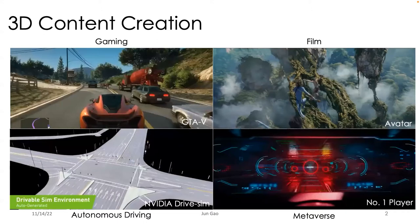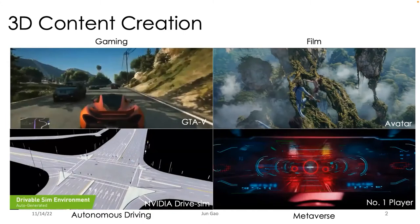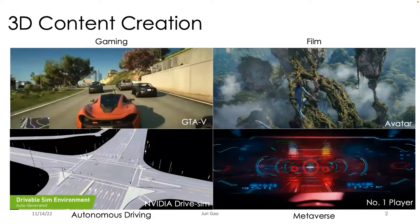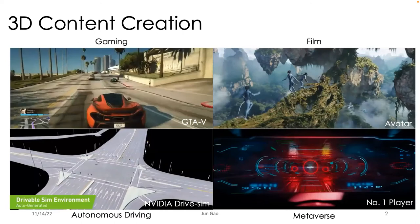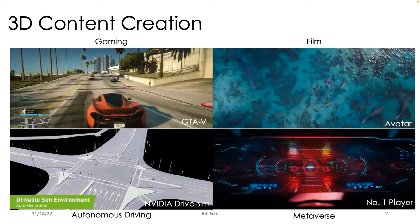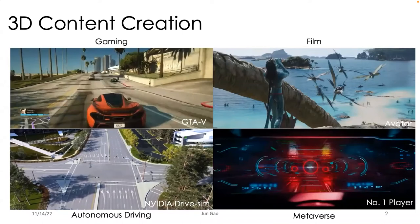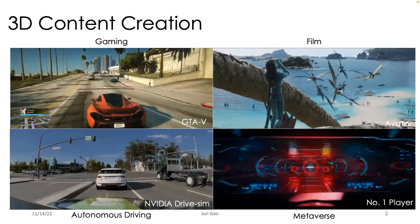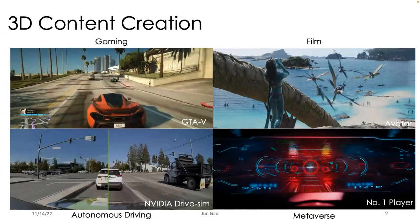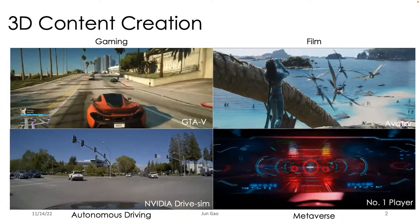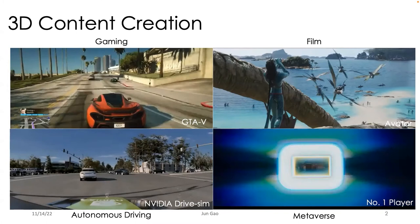Applications include gaming — in this video I'm showing a recording from GTA 5, where people need to create a large-scale city with many different cars, human characters, buildings, and trees. 3D content creation also enables film production, like Avatar, where people need to create a whole virtual environment including trees, animals, and all kinds of vegetation. In autonomous driving, 3D content creation is also important, as training on real environments can be inefficient or unsafe. Developing large-scale 3D content helps build simulators for training self-driving cars in safety-critical scenarios.